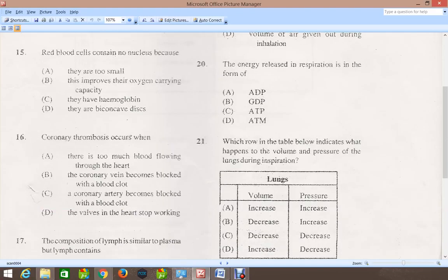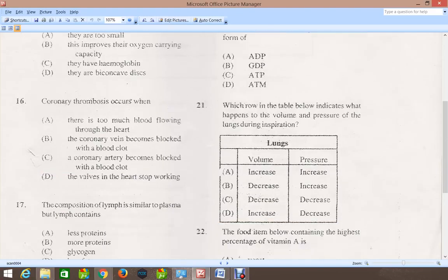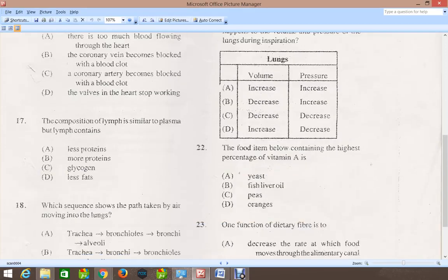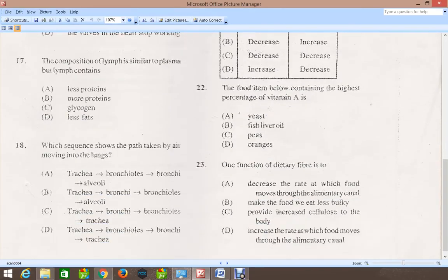Moving down to 21, which row in the table below indicates what happens to the volume and pressure of lungs during inspiration? That is breathing in, and the correct answer for 21 is D, which says that the volume of lungs will increase while the pressure will decrease.